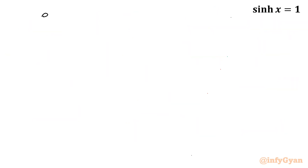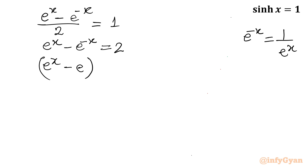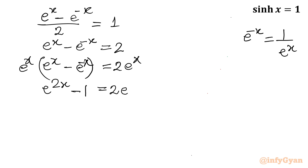Let's solve our problem. I write (e^x - e^(-x)) / 2 = 1. Multiplying both sides by 2: e^x - e^(-x) = 2. Now I'll use the exponent property — the power becomes positive when we take the reciprocal. Multiplying both sides by e^x gives us: e^(2x) - 2e^x - 1 = 2e^x. Taking all terms to the left-hand side: e^(2x) - 2e^x - 1 = 0.